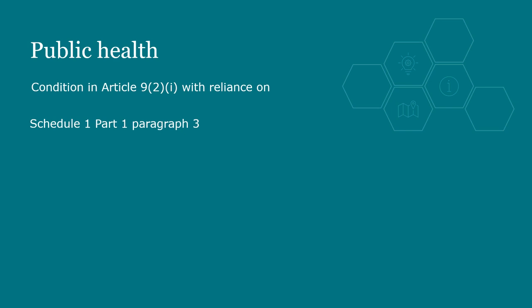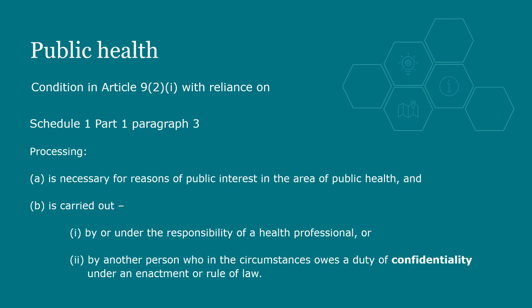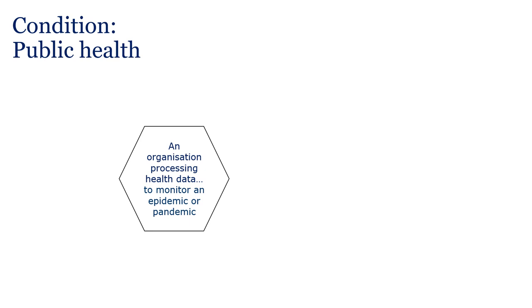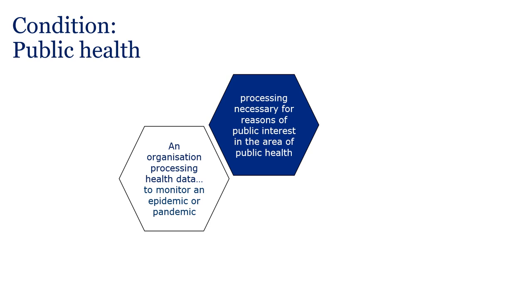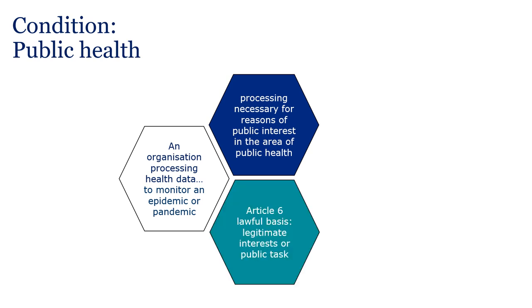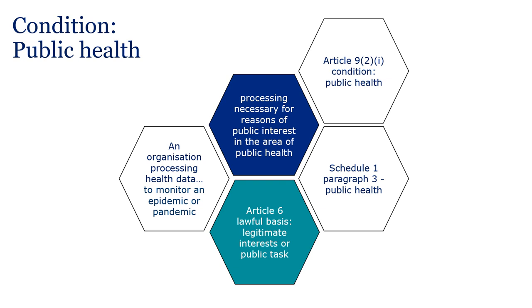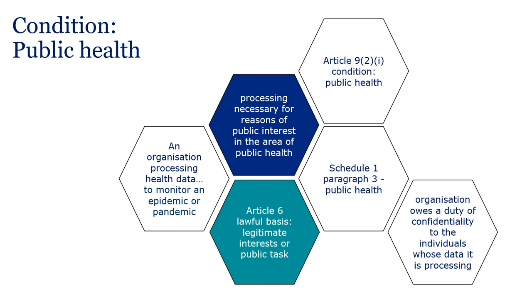Schedule 1 paragraph 3 concerns processing for reasons of public health. Confidentiality is a key safeguard when relying on this condition — organisations must be able to demonstrate that they owe a duty of confidentiality to the individuals whose data they are processing. For example, if an organisation is processing health data to monitor an epidemic or pandemic, this is likely to be the relevant condition. The processing must be necessary for reasons of public interest in the area of public health, and the Article 9 condition is public health with reliance on Schedule 1 paragraph 3.